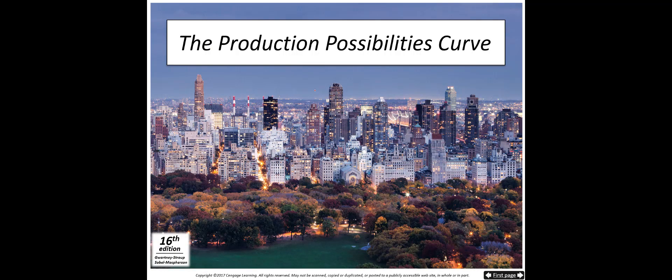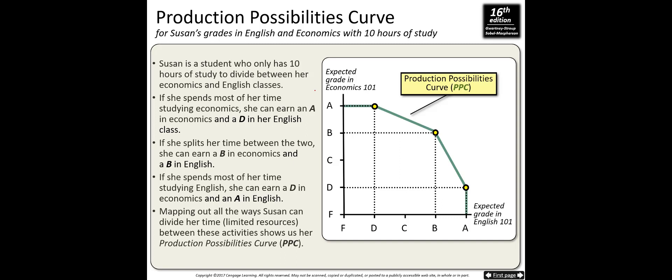Next, we will talk about the production possibilities curve. Susan's production possibility curve assumes she has only 10 hours of study — her resources are limited. She has only 10 hours to study either economics or English or both, so she needs to find the best way to allocate those resources. The production possibility curve shows how much grade she could get from each subject given those 10 hours.